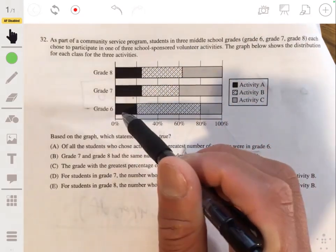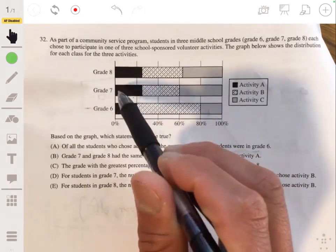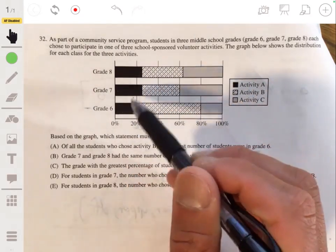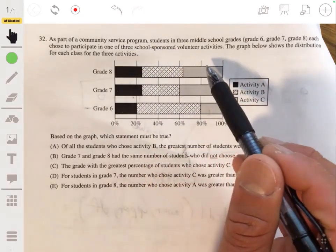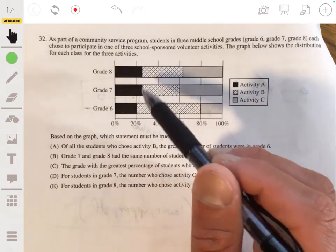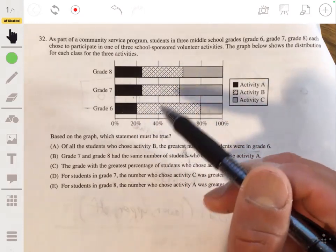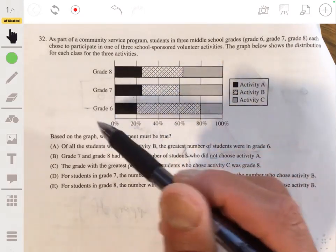We can't actually compare counts from one group to another, because there could be a thousand in group seven and maybe a hundred in group six, or maybe 50,000 in grade eight. The total amounts could be different. We can only compare proportions, so it's not going to be A.